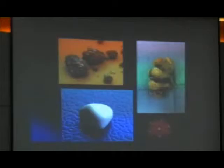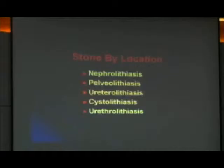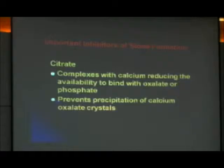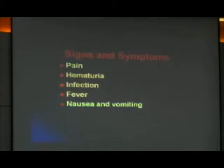Stones come in many different shapes, sizes, and colors. Patients ask what type of stone they have — we can tell them based on what it looks like, but we have to do a stone analysis. Stones can be described based on location: if they are in the kidney, they are nephrolithiasis; if they are in the ureter, ureterolithiasis. What are the inhibitors of stone formation? The most important is citrate. It complexes with calcium, reducing the availability of calcium to precipitate. There are many other inhibitors, but citrate is the most important, and studies have shown it's one of the most important medications we can give for patients with stones.